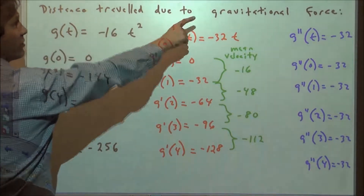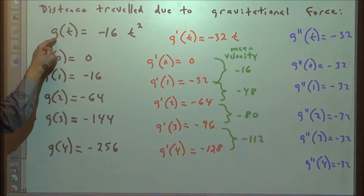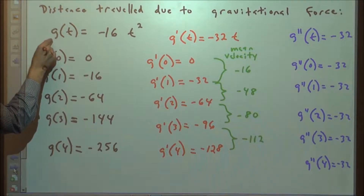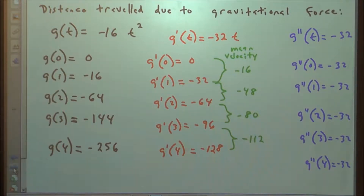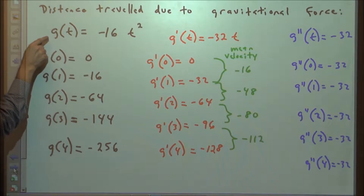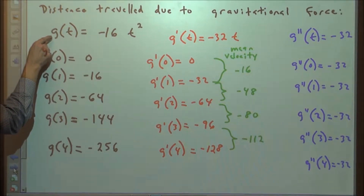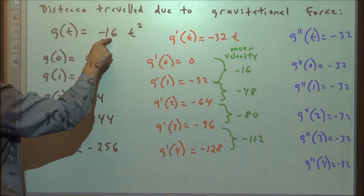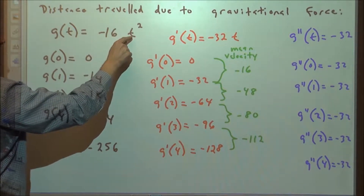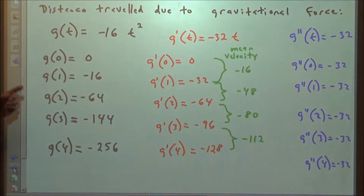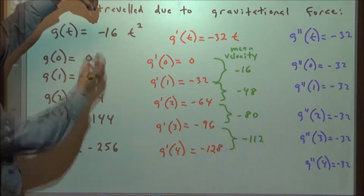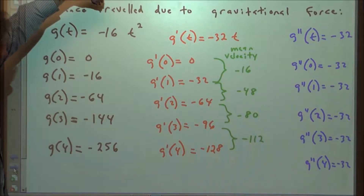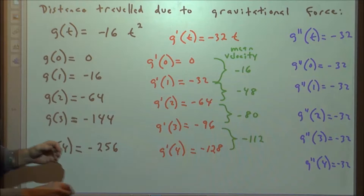Let's look at the distance traveled due to gravitational force. We're going to say that gravity is a function of time — this is the distance that an object will have fallen over the course of time. The distance fallen as a result of gravity is going to be negative 16 feet times the number of seconds squared. So at time zero, if you hold something steady and then you drop it, at time zero it hasn't dropped at all.